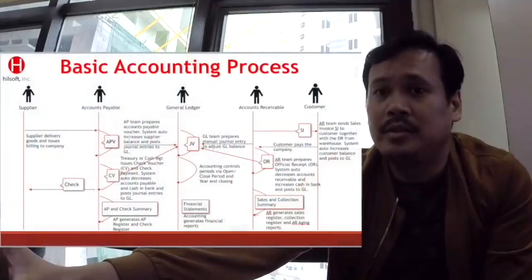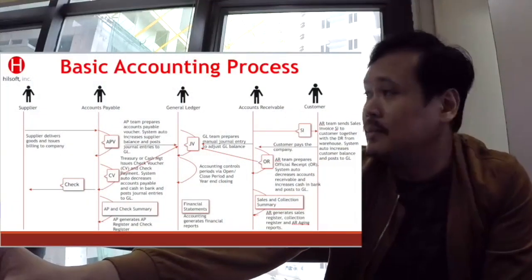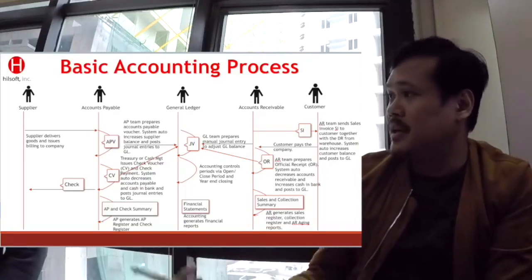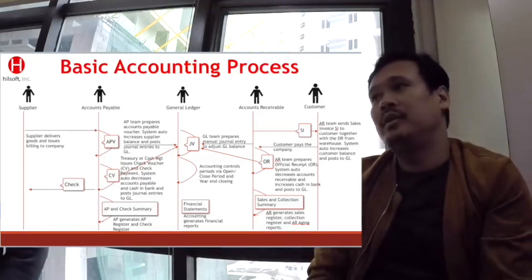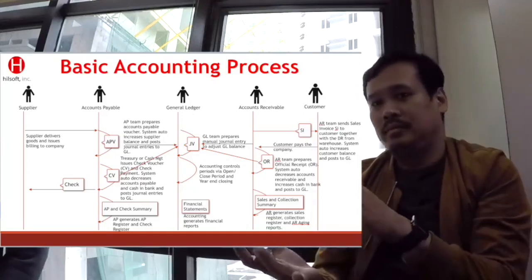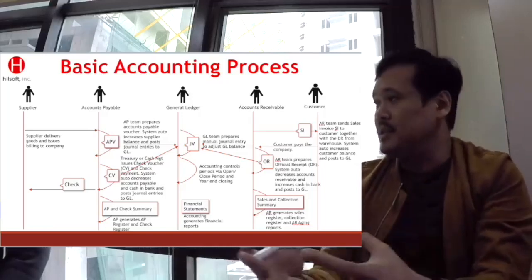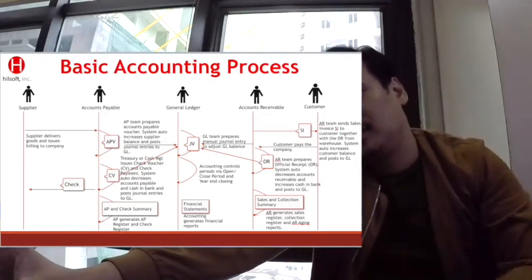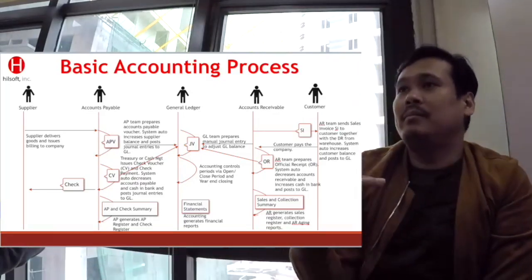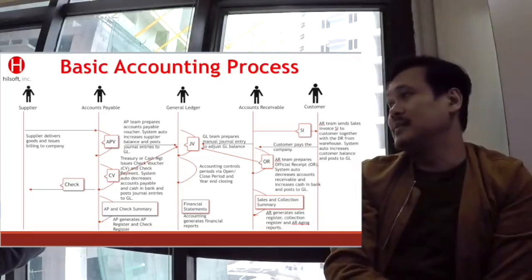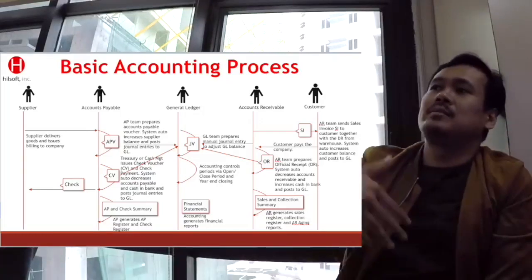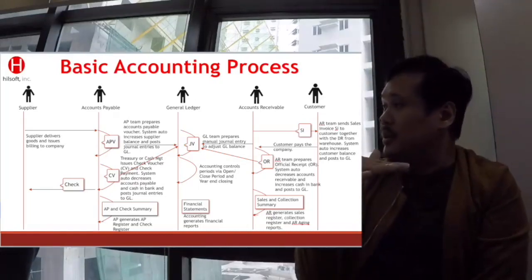A supplier delivers goods and issues a billing to the company. Like recently we ordered business cards — the supplier delivered the business cards together with the billing: 5,000 pesos for these business cards. So accounting will encode that in the AP voucher, so we know and can track our utang to that supplier. Then automatically there's a report for it.